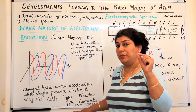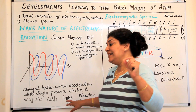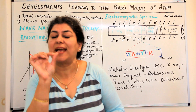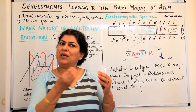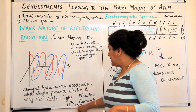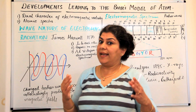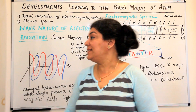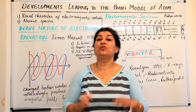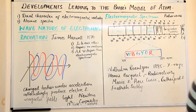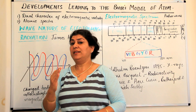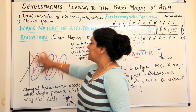Newton had said that light is an electromagnetic radiation but consists of particles, which he called corpuscles. However, in the 19th century, it was found that light also has wave nature. So light is an electromagnetic radiation which has both wave nature and particle nature. Right now, we are going to focus on the wave nature of light and what electromagnetic radiation is like.